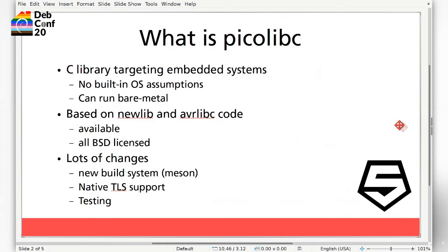The Meson build system is pretty useful in this environment because one of the things autotools spends a lot of time doing is running shell scripts, and Meson doesn't do that at all. I'm currently building 240 different variants of the library in the CI system, which compiles some 13 million source code files, and that builds in about 40 minutes. I would hate to see what autotools would do to that. Another big change is it uses the native thread local storage support available in GCC.